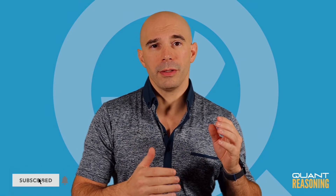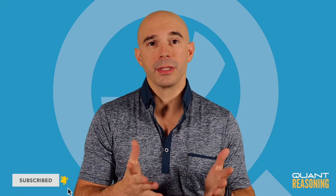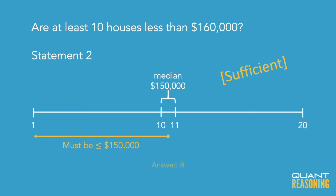All of the numbers before that — the 1st through 9th numbers in the set — will be even lower than the 10th number, because they're arranged in ascending order. So this answers our question definitively with a yes: at least 10 of the numbers are below 160,000. In fact, none of the first 10 is above 150,000. Since statement two is sufficient on its own, the correct answer is B.